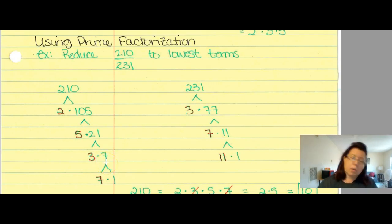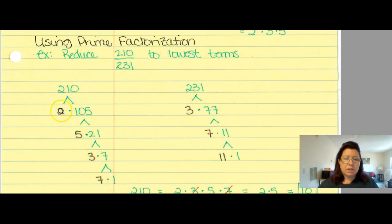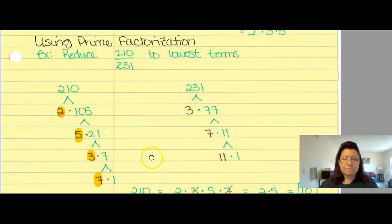I like all my prime numbers on the left, so I break 7 down into 7 times 1. My prime numbers are 2, 5, 3, and 7. So 210 is 2 times 5 times 3 times 7.